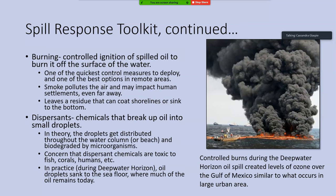One possible way to deal with oil is by burning — a controlled ignition of the spilled oil to burn it off the surface of the water. This is one of the quickest control measures to deploy and one of the best options in remote areas. In those first three days after the Exxon Valdez oil spill, this would have been the method to deploy, but unfortunately it was not used until it was essentially too late. Burning oil does produce a lot of pollutants — smoke pollutes the air and may impact distant settlements — and it leaves behind a residue, but a lot of the oil is removed.